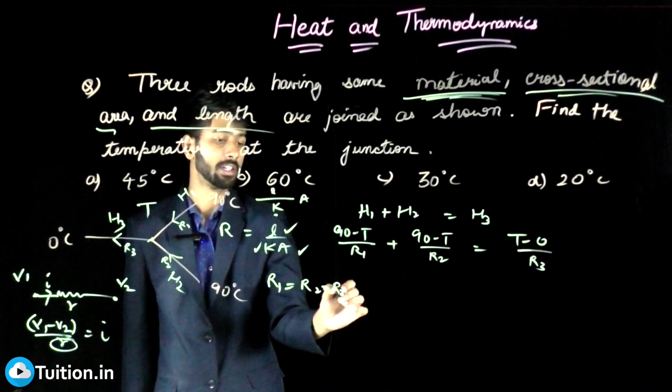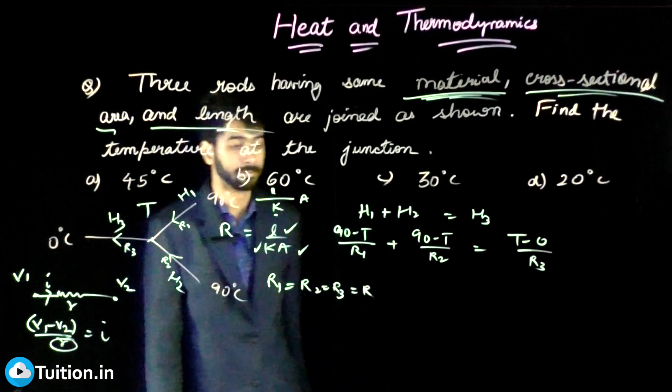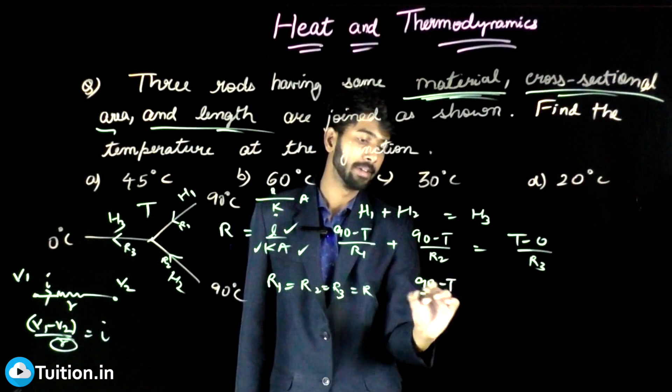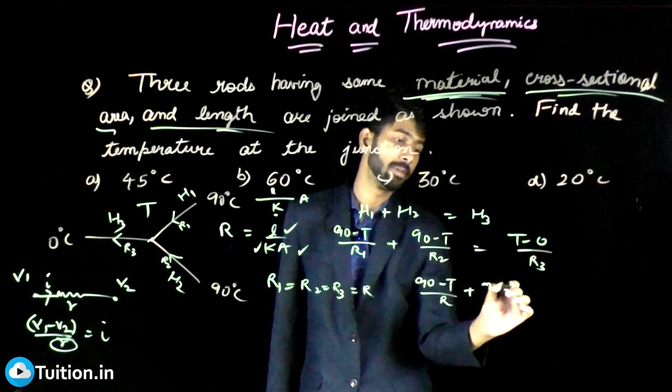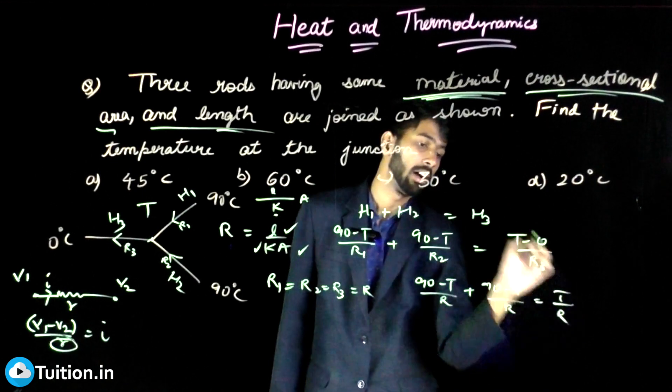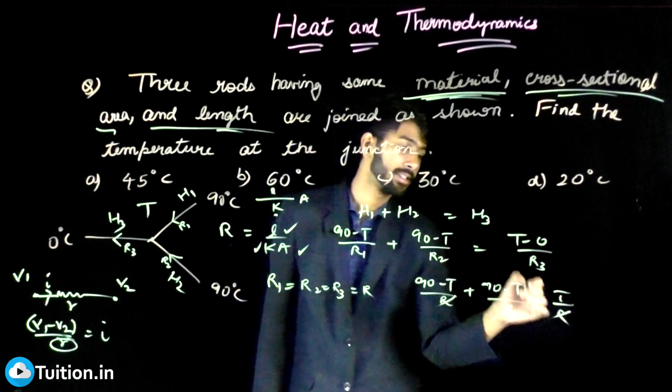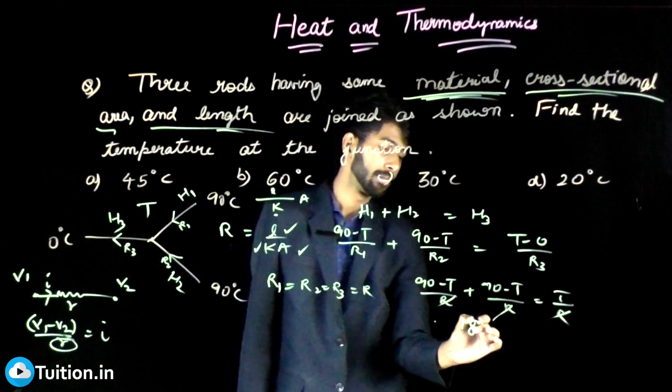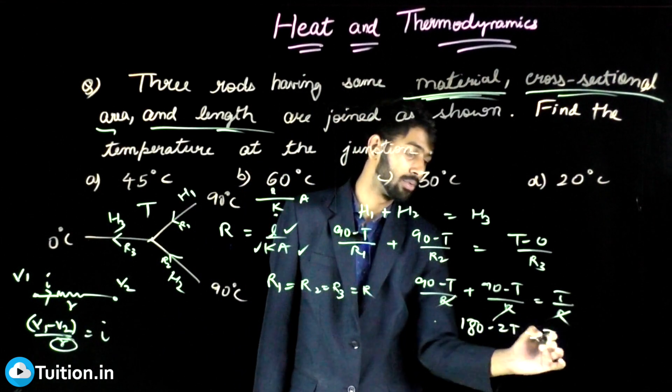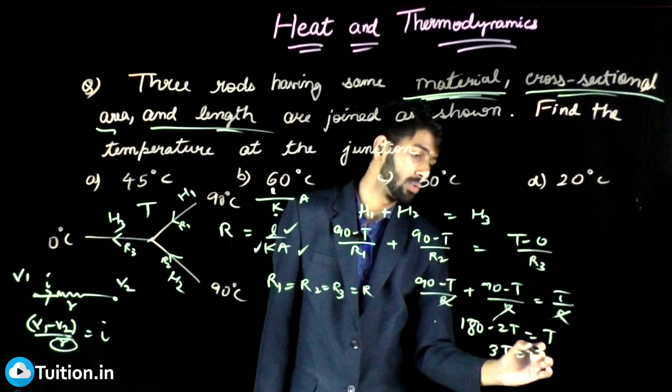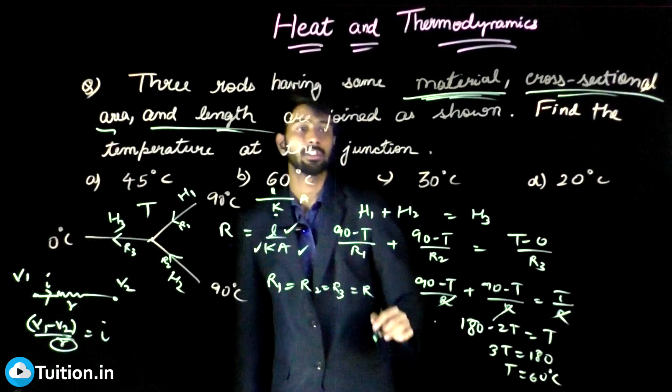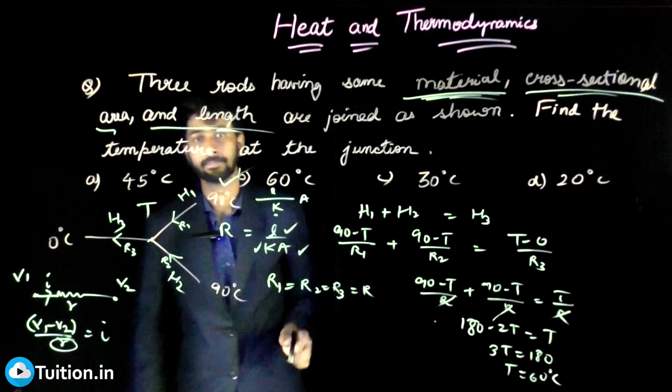So I can replace all of them by R. 90 minus T by R plus 90 minus T by R equals T by R. So cutting the R's, you have 90 minus T plus 90 minus T, which is 180 minus 2T, equals T. So 3T equals 180, which means T equals 60 degrees Celsius. So the answer is option B.